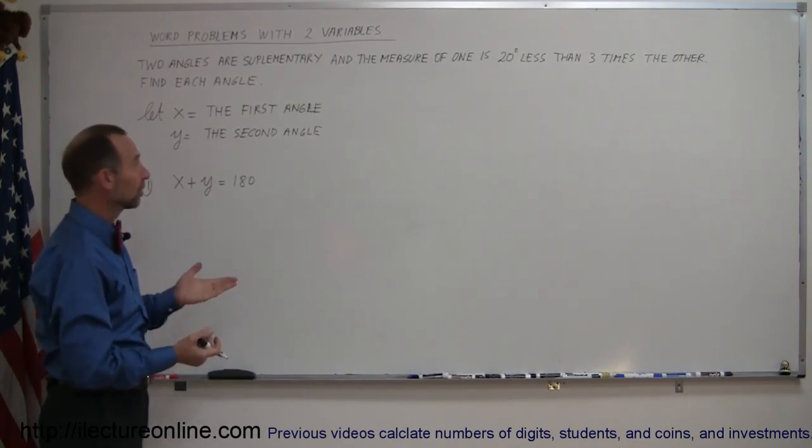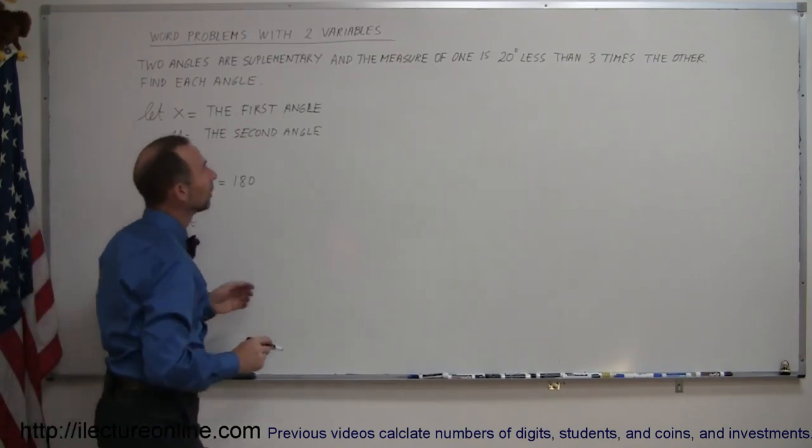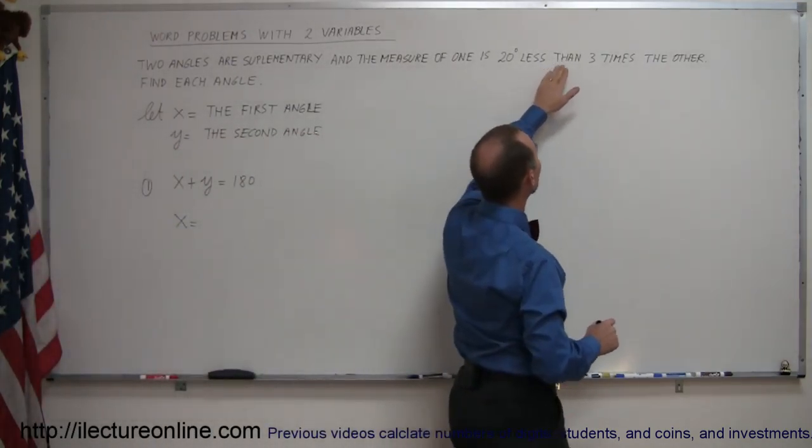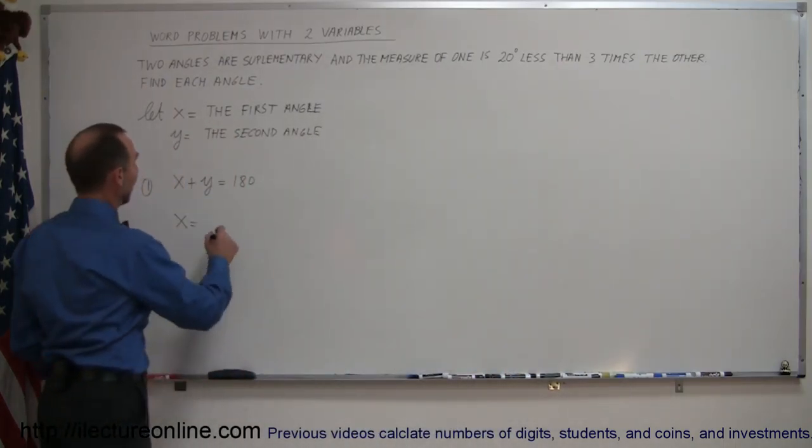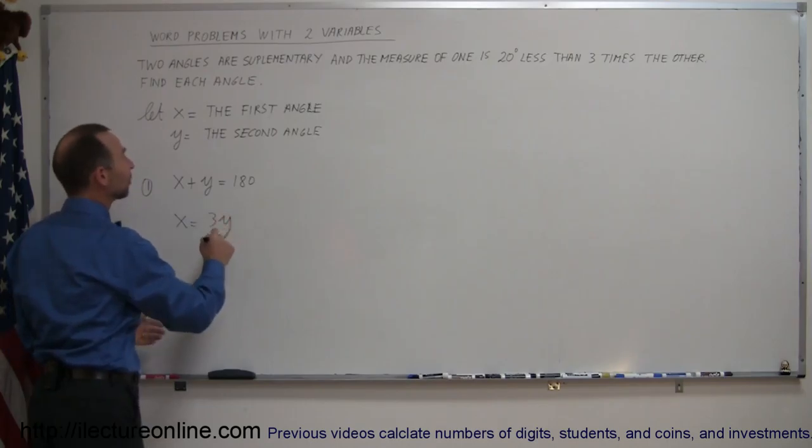So we can say let x equal 20 degrees less than three times the other. So three times the other—if x is the one, then y is the other.